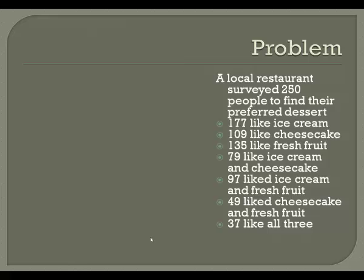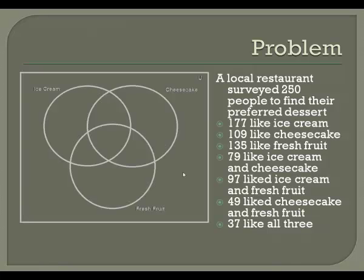Here we have this set up. A local restaurant surveyed 250 people to find their preferred dessert. So to start with, I have three groups: those who like ice cream, those who like cheesecake, and those who like fresh fruit. Those seem to be the only options given. So I'm going to start with a Venn diagram with three circles. My universe here is going to be those 250 people who were surveyed.